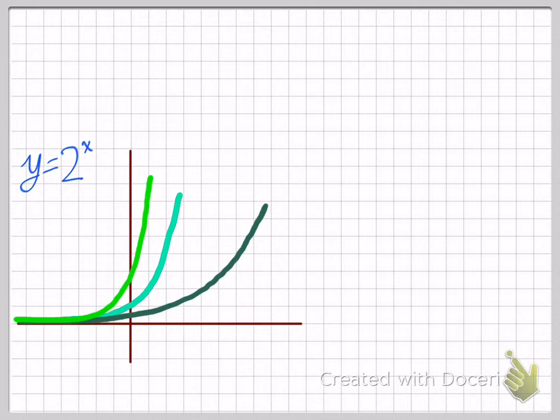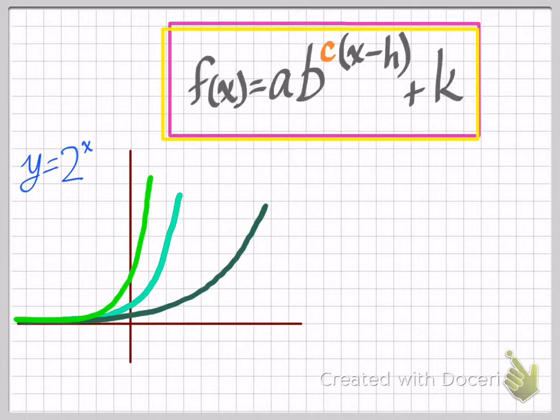So here is the general structure of an exponential function. a times b to the power of c times x minus h plus k. I'm going to put a little asterisk there about the c. I'm going to talk about that special in just a second. But I do want to talk about all of those little parameters. I think of them as kind of like control knobs on some kind of machine and you turn the knob one way and it does something to the graph.